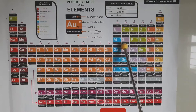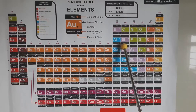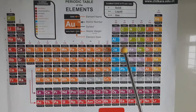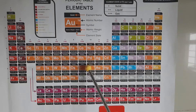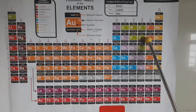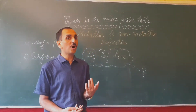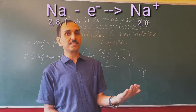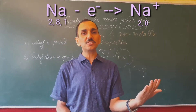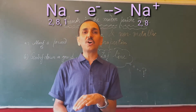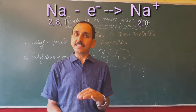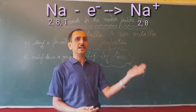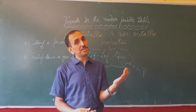These elements have intermediate properties and are called metalloids or semi-metals. Silicon, for example, is classified as a semi-metal or metalloid because it exhibits some properties of metals and some of non-metals. Metals are those elements which lose electrons and form cations.